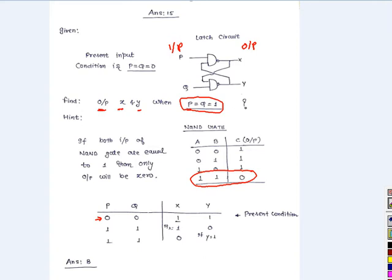The next condition is if the inputs are 1 and 1. If P equals 1, the output of this NAND gate depends on the value of Y.